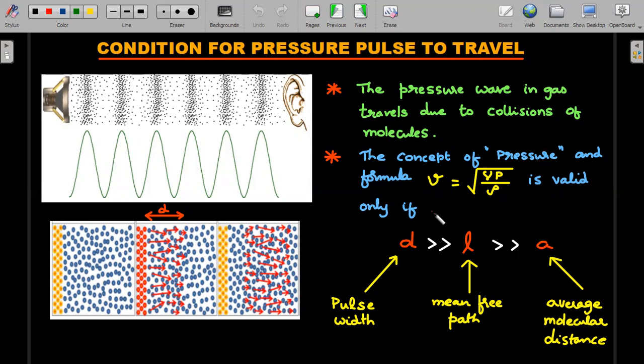Whatever pulse width that we are looking at, let's suppose in this system on the left side the initial gaseous molecules are there and suddenly an information of pressure is propagating. Then the propagation of the information from one place to another place can only take place if the mean free path, which is nothing but the average distance that is traveled before the molecule collides with something else, should be very very small in comparison to this width.